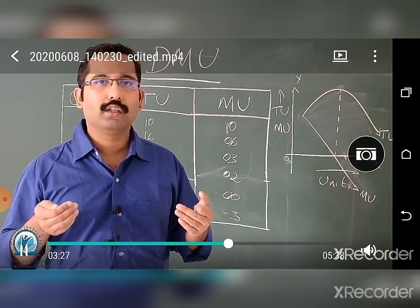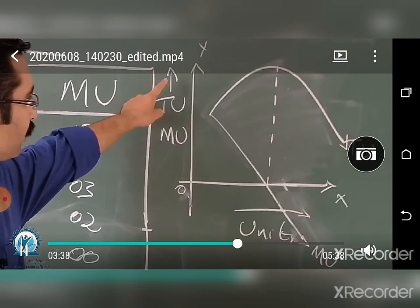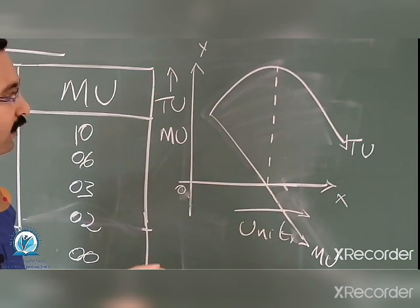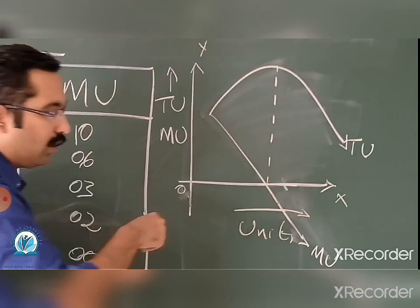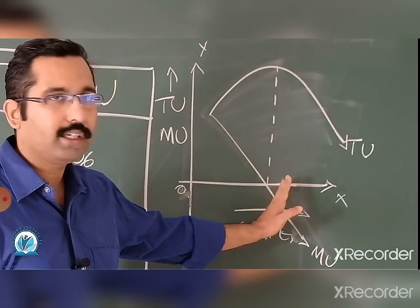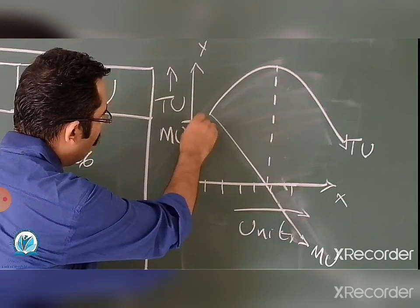So when we consume a lot of units of a commodity, the utility it adds keeps on reducing. Now, how do we put this in the form of a graph? There is a graph already on the board. There are two axes — on the Y-axis I have taken total utility and marginal utility, and on the X-axis I have considered the number of units. Moving right on the X-axis means consuming a higher number of units; moving upward on the Y-axis means total utility and marginal utility also change.